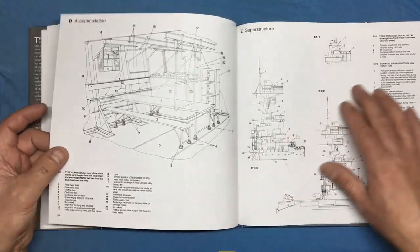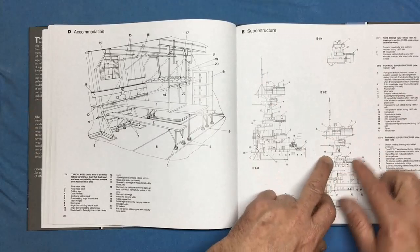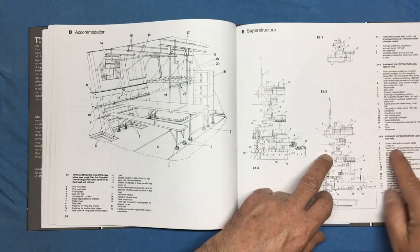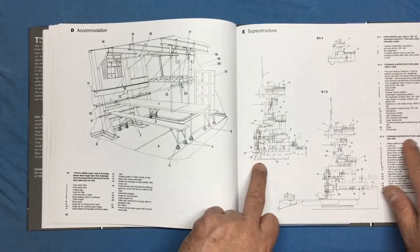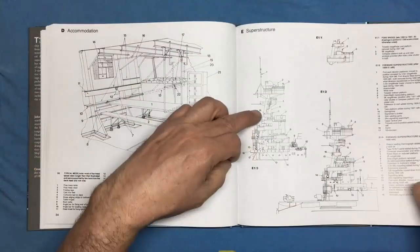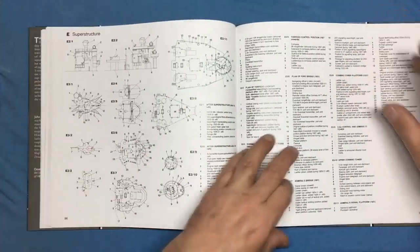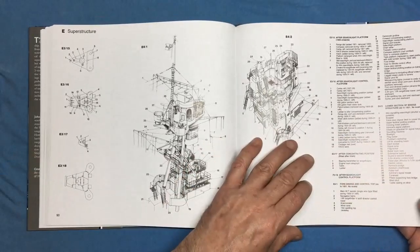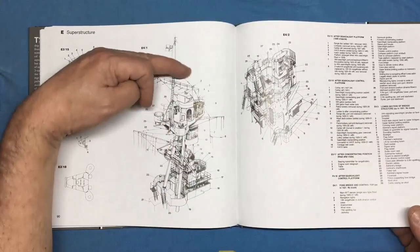And then we've got different deck cutaways and everything here, or floor layout should I say, all the grills and everything. It just goes on and on, all the engine rooms. And the beauty of this book, it actually gives you details. So E12, this is the forward superstructure after the 29 to 31 refit, and then you've got E13 which is after the 1939 refit.